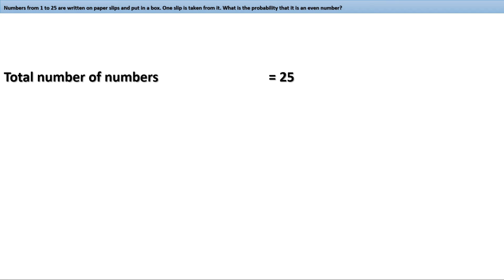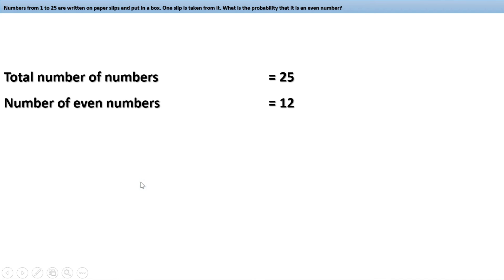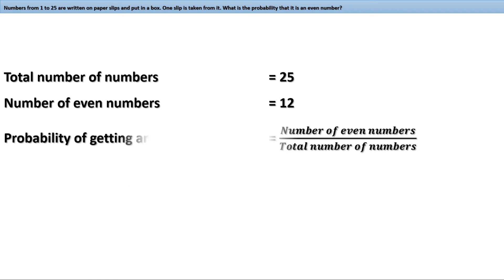Now let us look at 25 — is it odd or even? It is odd. That means when we take numbers from 1 to 25, 12 are even and 13 are odd. Therefore the number of even numbers is 12, and the probability of getting an even number is 12 by 25. The probability of getting an odd number is 13 by 25, since there are 13 odd numbers out of 25 total.